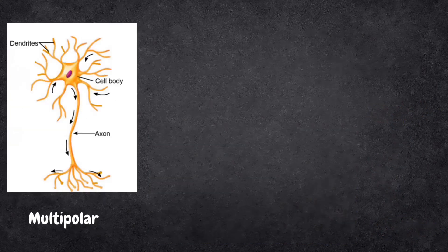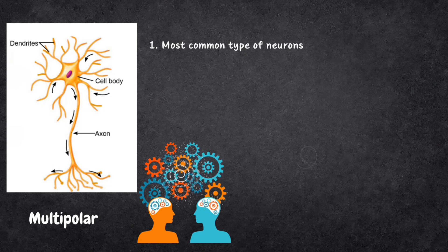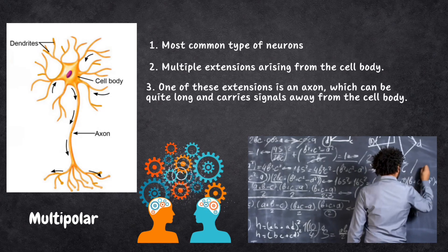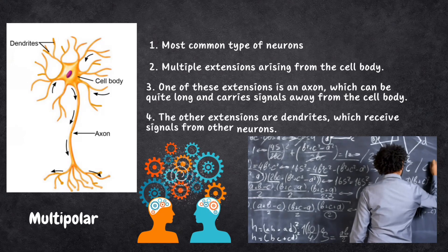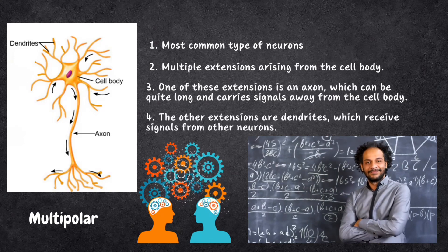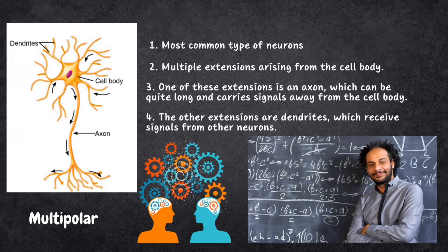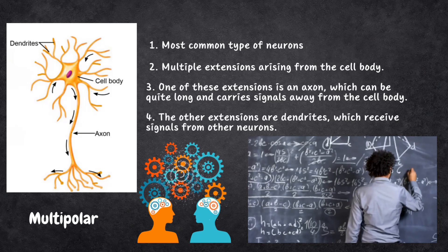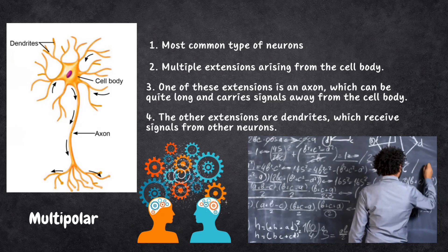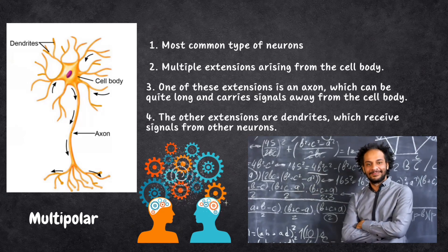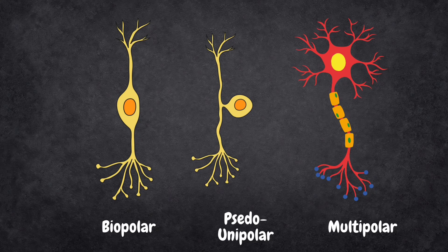Multipolar neurons are the most common type of neuron in the nervous system. They have multiple extensions arising from the cell body — one axon, which can be quite long and carries signals away from the cell body, and multiple dendrites which receive signals from other neurons. They are most commonly found in the brain and spinal cord, and are involved in a wide range of functions including motor control, cognitive processes and sensory integration. In summary: bipolar neurons have two extensions; unipolar neurons have one main extension that branches into two; and multipolar neurons have multiple extensions.